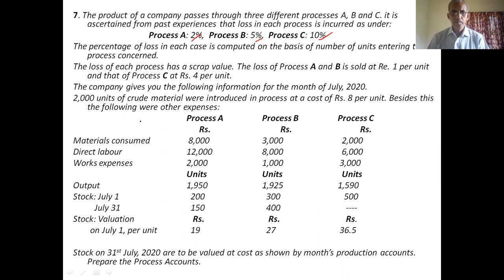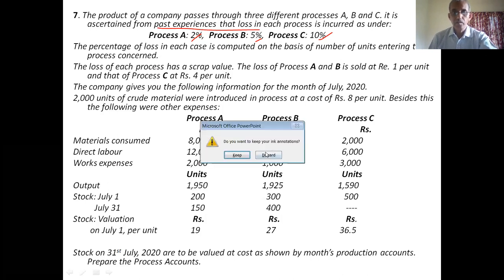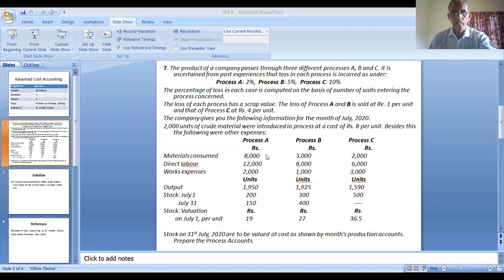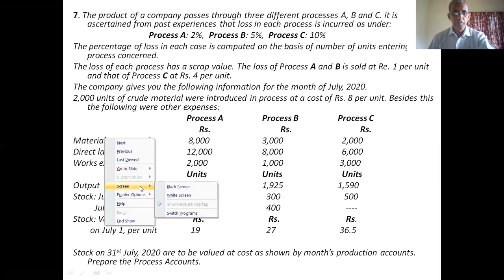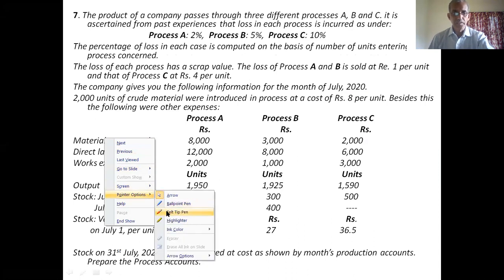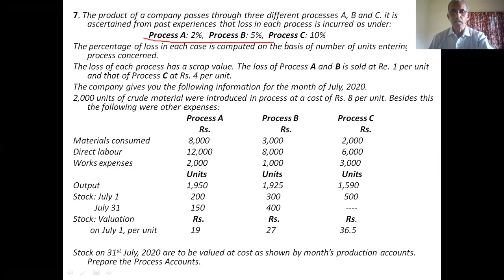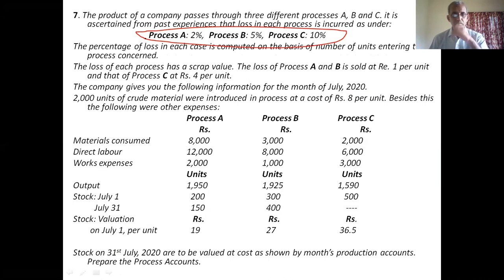What is this? This is nothing but normal loss. Normal loss is the loss which is expected from past experience. So 2%, 5%, and 10% from processes A, B, and C are nothing but normal loss. You may also get abnormal loss or abnormal gain.